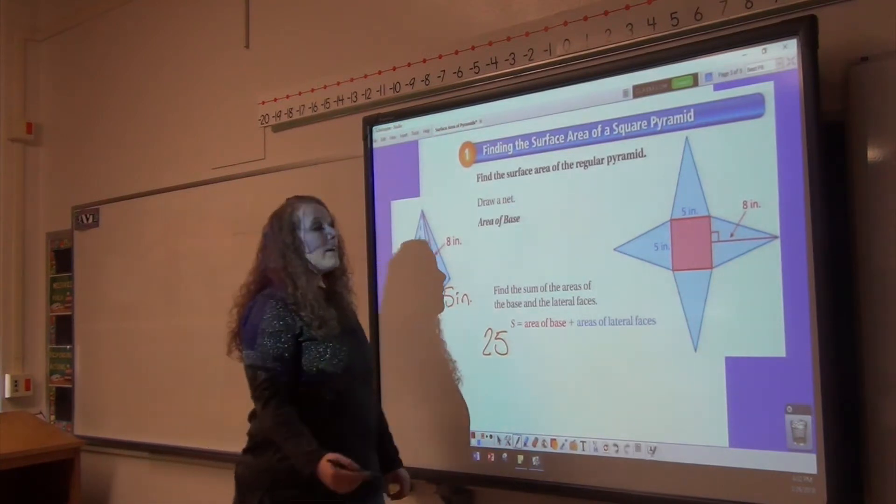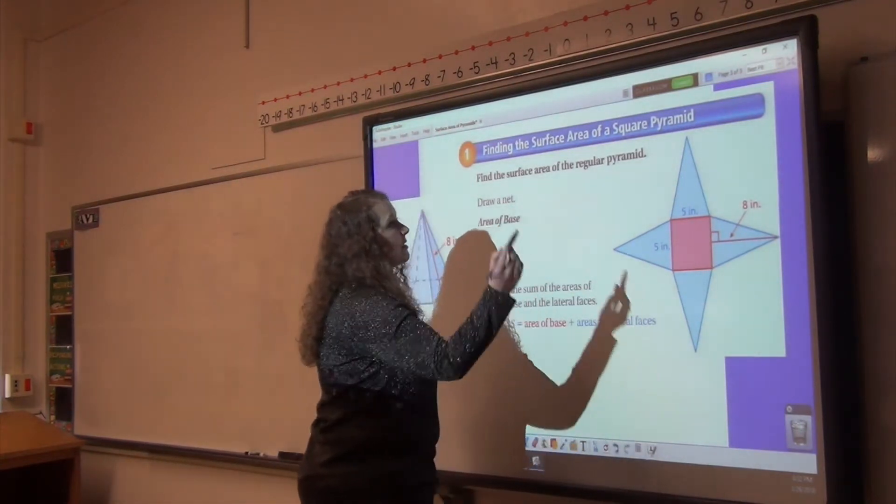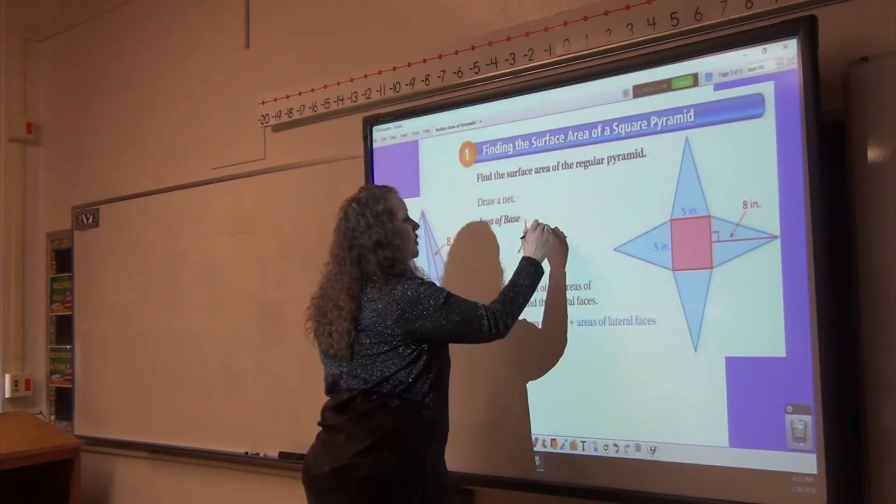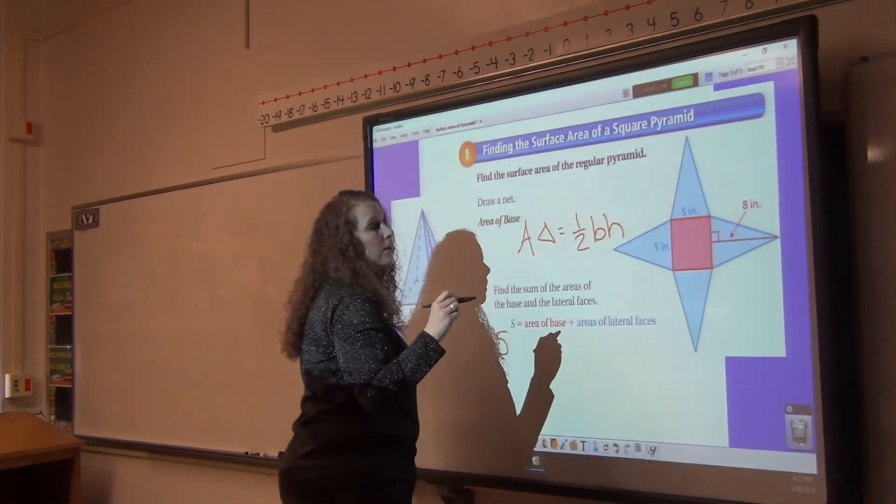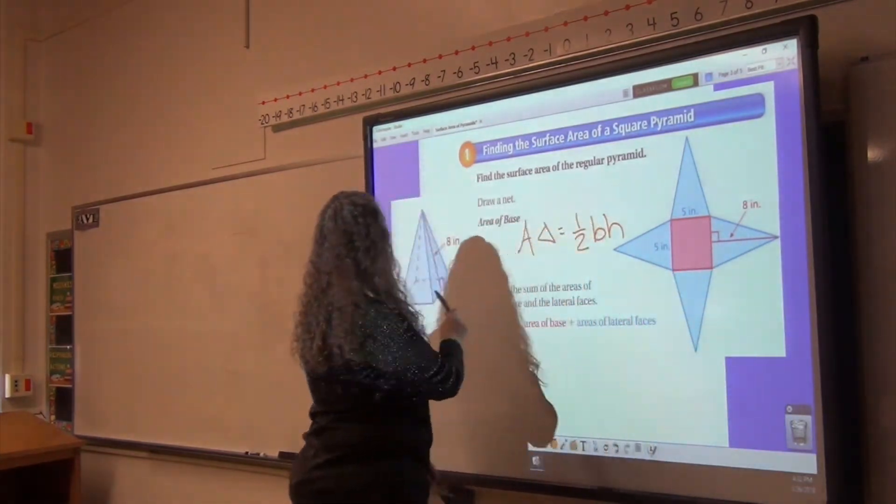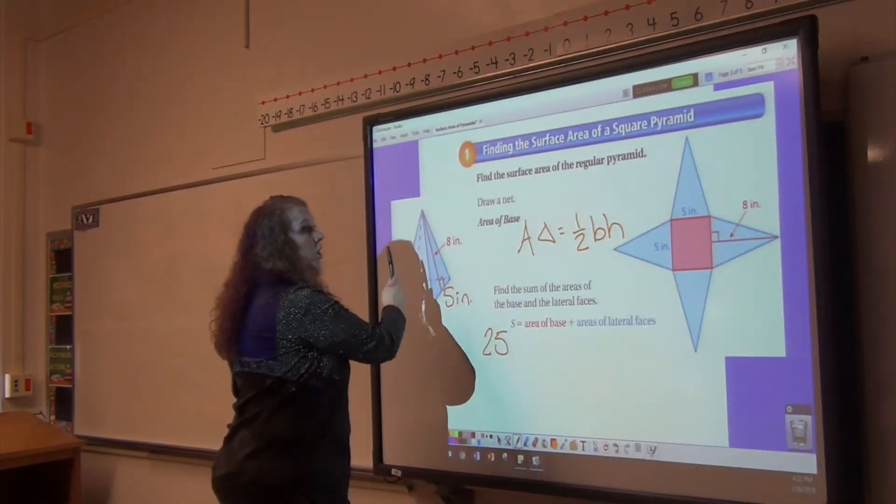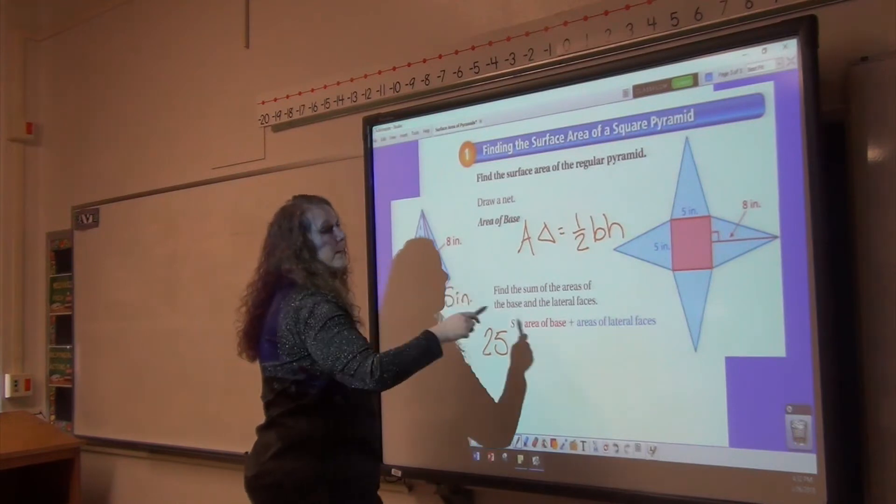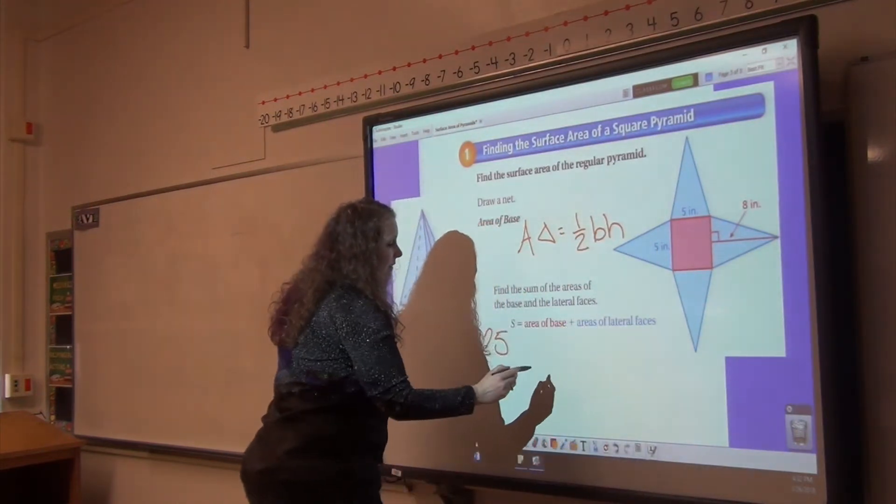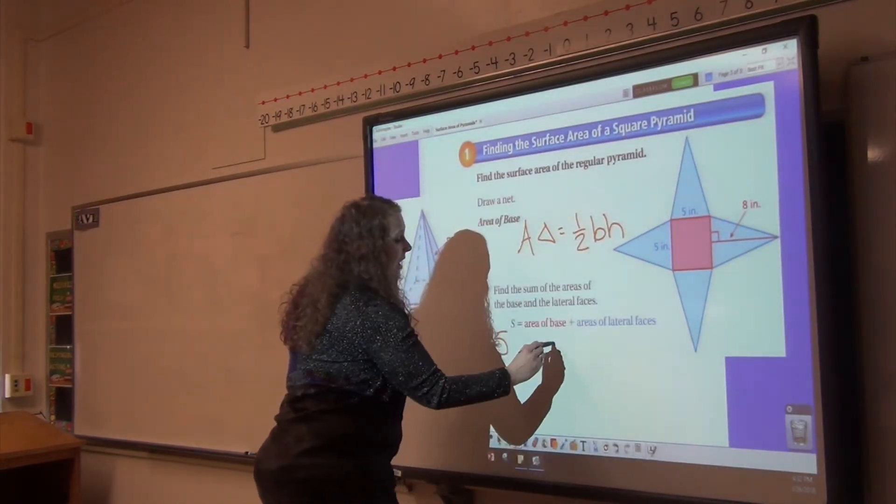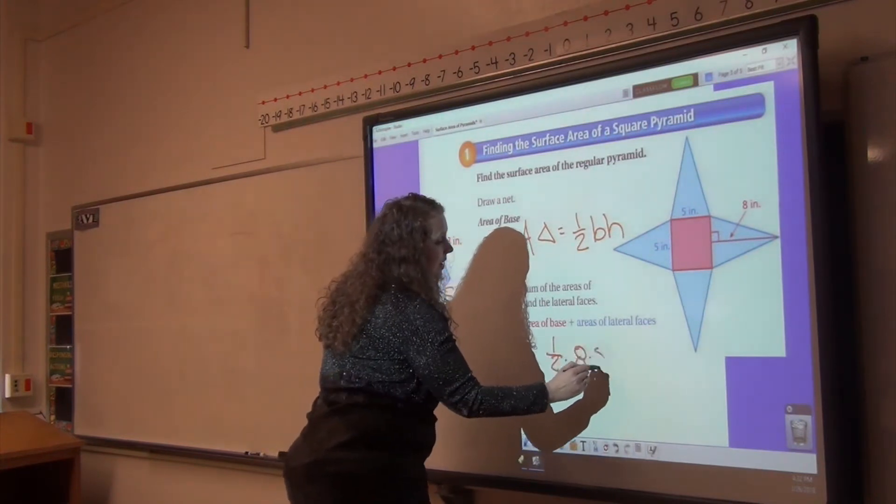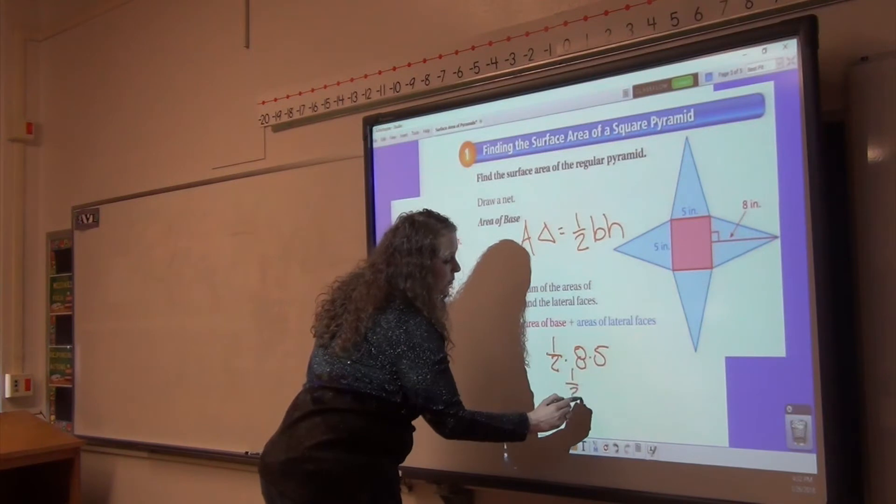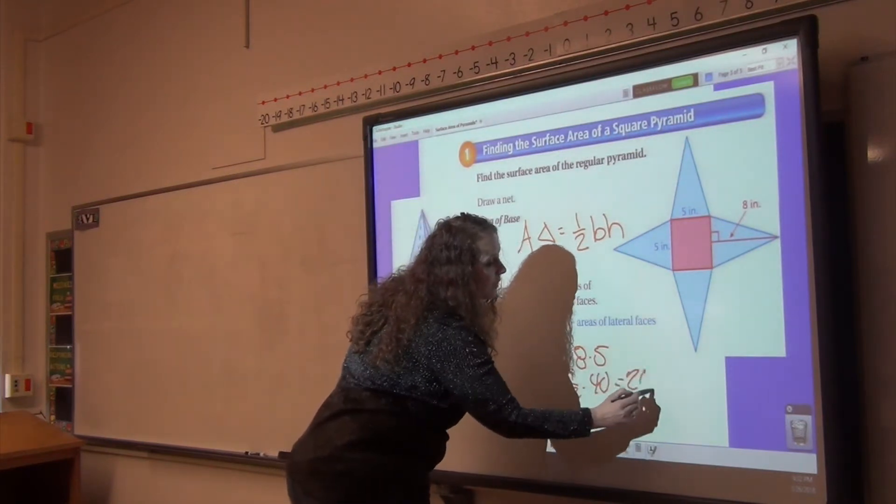The area of one of our faces is, area of a triangle equals one half base height, right? Our height is eight. It is our slant height of our pyramid. It's not how tall our pyramid is. It is our slant height. Eight times five is 40, and we have to take half of that, one half times eight times five. So it's one half of 40, which equals 20.